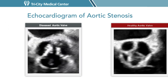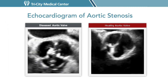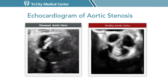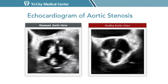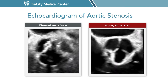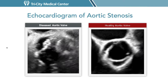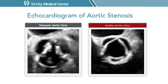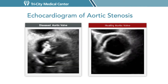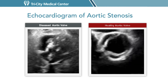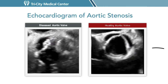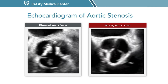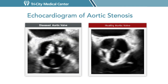This is an example of an echocardiogram of a diseased calcific aortic valve with stenosis compared to a healthy aortic valve. The valve on the left, as you can see, is restricted and doesn't open fully, and there's buildup of calcium on the leaflets. The valve on the right is the healthy aortic valve, and as you can see, it opens and closes very naturally.